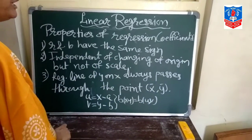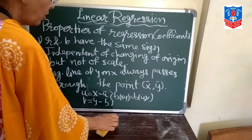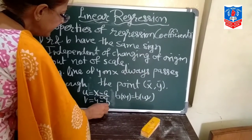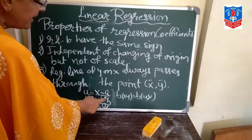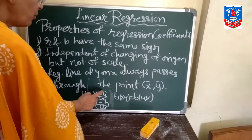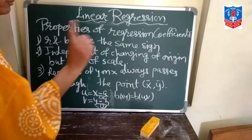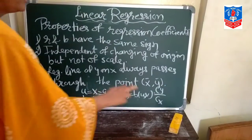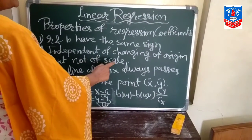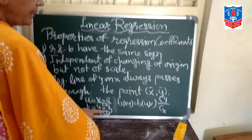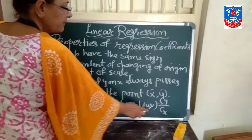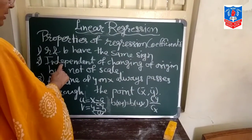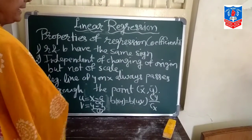But it is not independent of scale. That means if instead of X minus A, we use CX and CY — where we divide by a common factor — then B_XY cannot equal B_UV. In the formula, we had to multiply by C_Y upon C_X. Because of this reason, the regression coefficient is not independent of scale. If you divide or multiply, the value of B_XY won't be the same as B_UV.